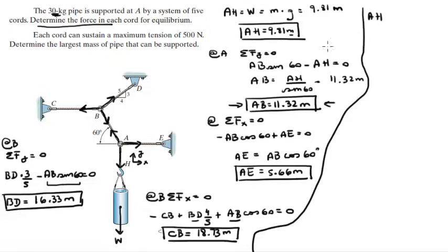AB becomes 11.32 times the mass, which is 340 newtons. AE is 5.66 times the mass, which is 170 newtons. BD is equal to 490.5 newtons, because BD is 16.33 times the mass. And CB is equal to 562.3 newtons, because it's 18.73 times the mass. And that's it. We solved the first problem.